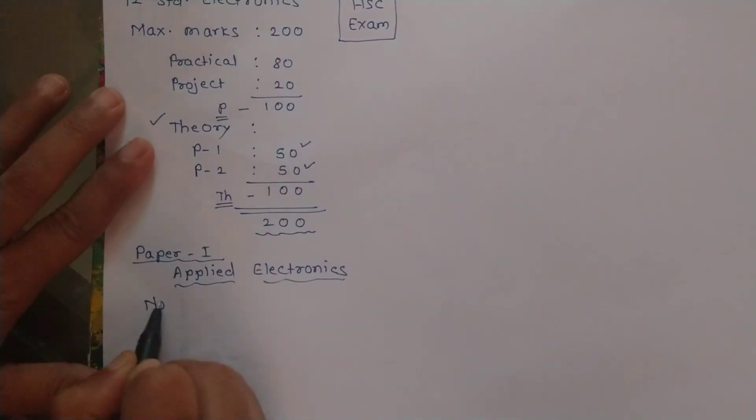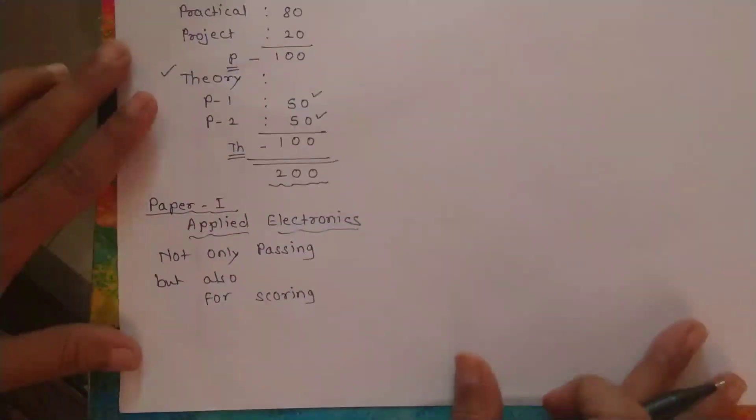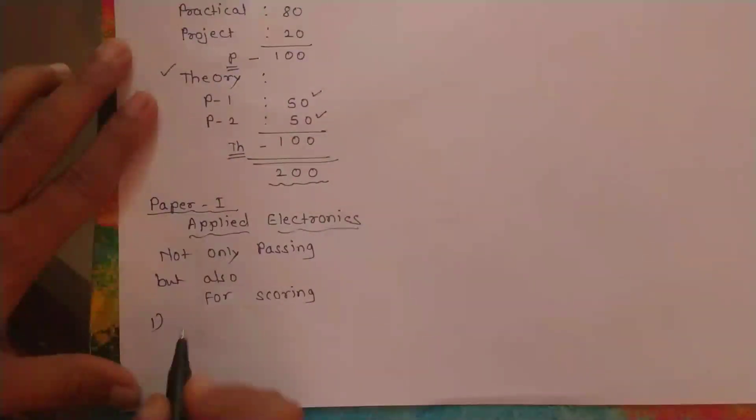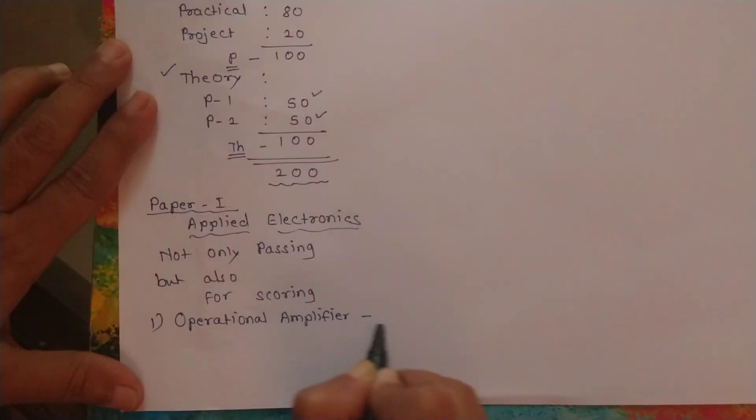Not only passing but also for scoring, you can study chapters as the most important: operational amplifier, where maximum 22 to 25 marks you can get if you prepare best for this chapter.